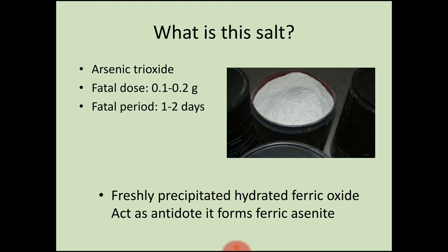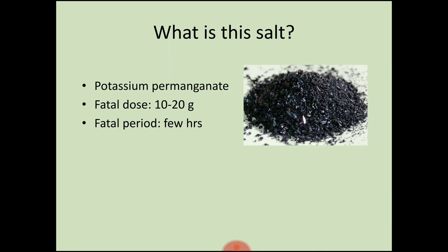Next salt is arsenic trioxide. Fatal dose is 0.1 to 0.2 grams and the fatal period is 1 to 2 days. Freshly precipitated hydrated ferric oxide acts as an antidote by forming ferric arsenite. Next salt is potassium permanganate — fatal dose is 10 to 20 grams and fatal period is a few hours.